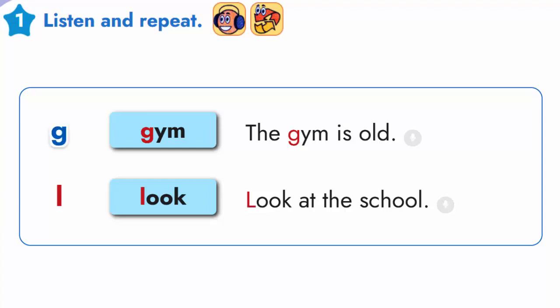J — Gym. The gym is old. L — Look. Look at the school.